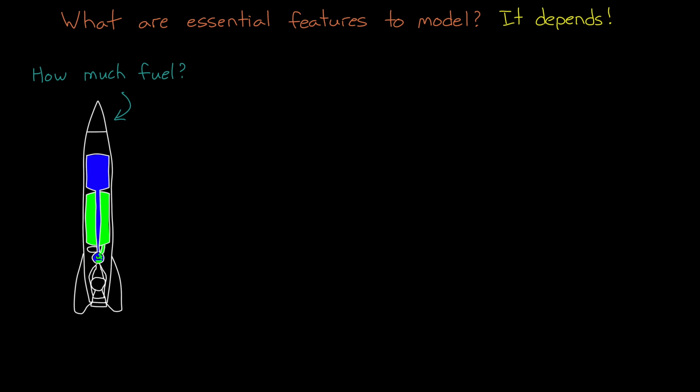For example, if you want to understand how much fuel is needed for a particular rocket launch, then the model of the rocket should take into account the dynamics that play a significant part in determining this. These are things like the mass, the thrust, the aerodynamics, the atmosphere and gravity, and information about the trajectory.